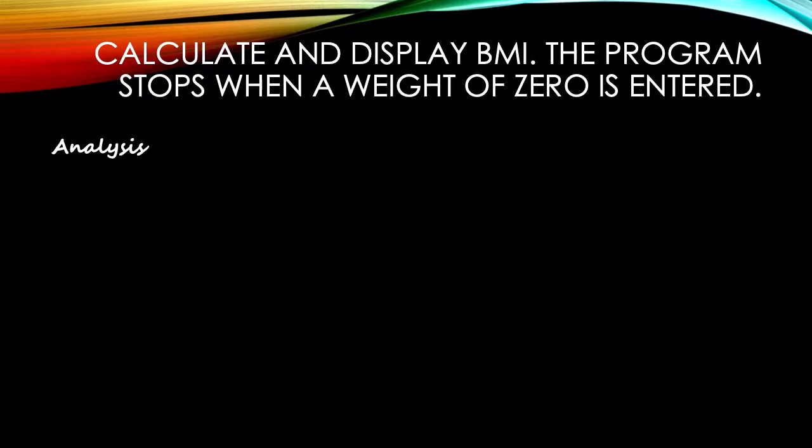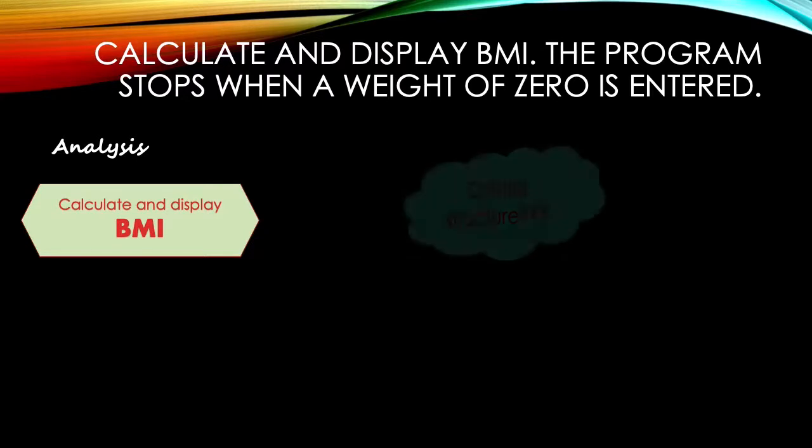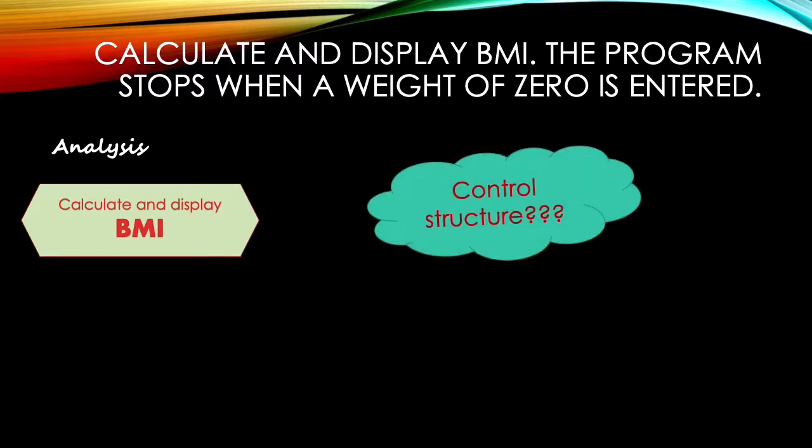Let's do the analysis for the problem statement: calculate and display BMI. What type of control structure should we use? When the program stops when a weight of zero is entered, it means the BMI will continue calculating until the user keys in zero.